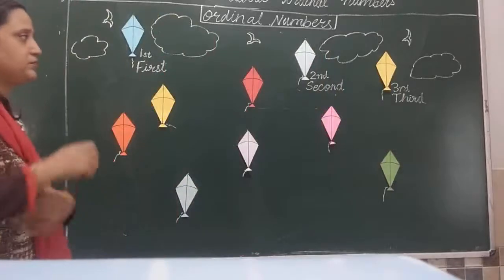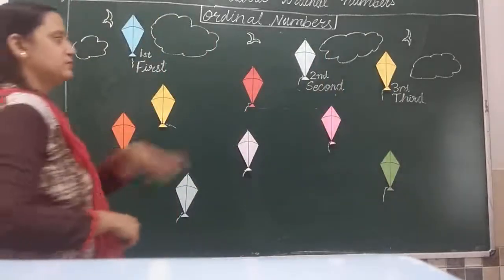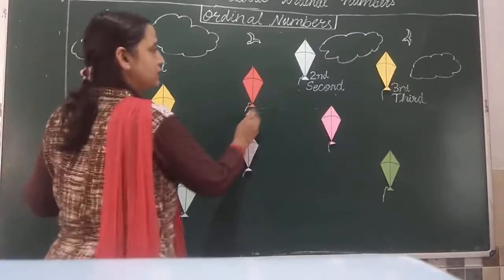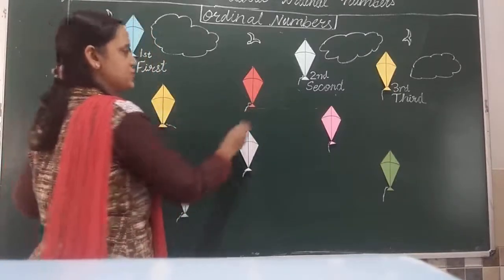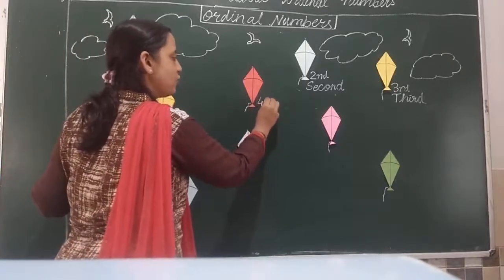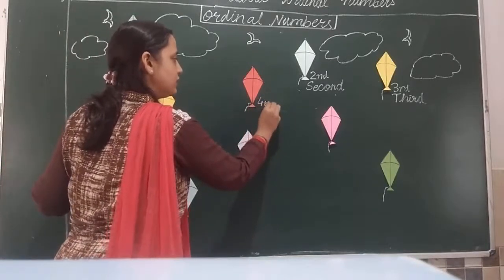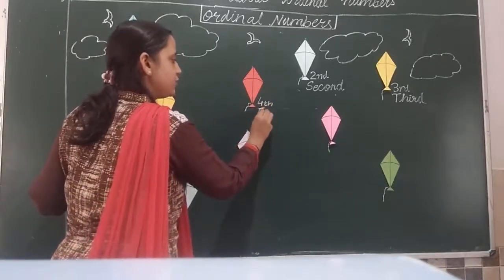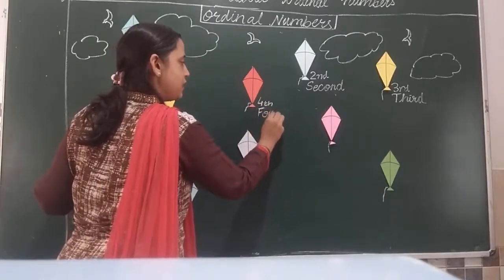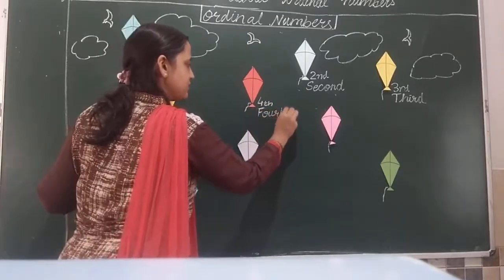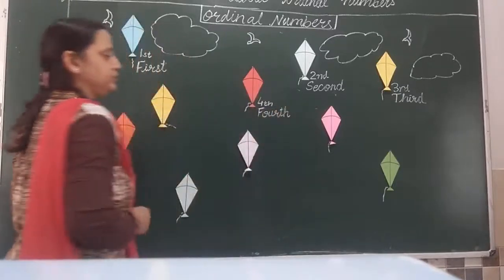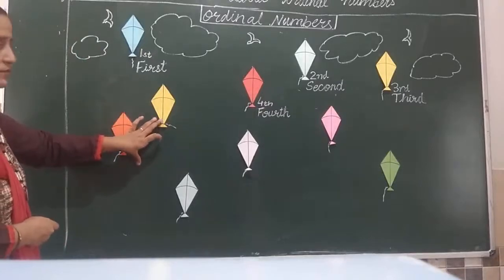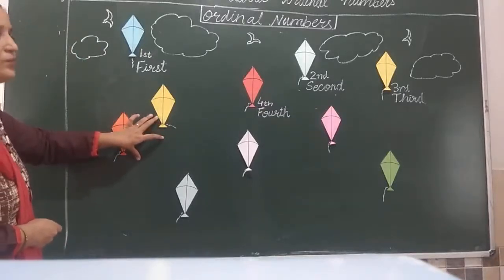And then this red color kite is at fourth position. So we write: 4 with 'th'. F-O-U-R-T-H. Fourth. Well, this yellow kite is at the fifth position. Yes, this is at the fifth position. So we write: 5 with 'th'. F-I-F-T-H. Fifth.